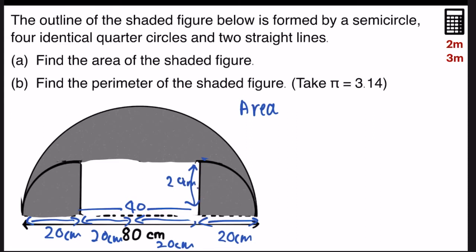So to find the area, I just have to take the area of the big semicircle, subtract the rectangle that's in the middle.